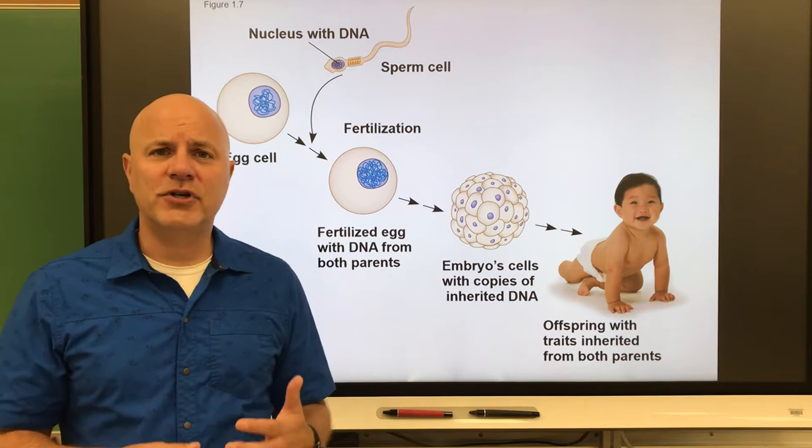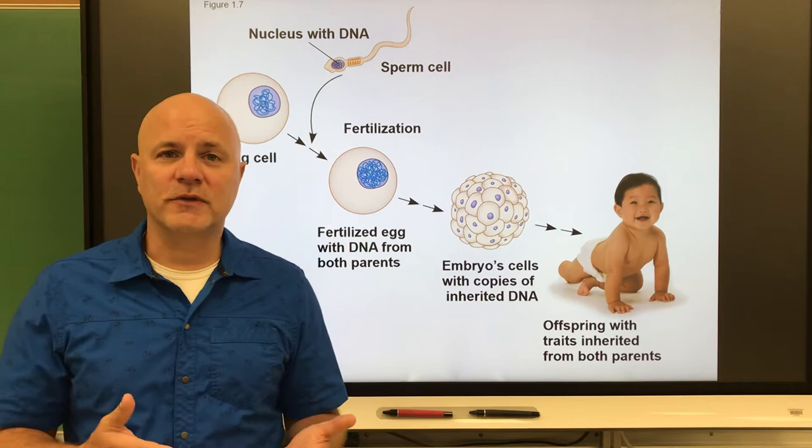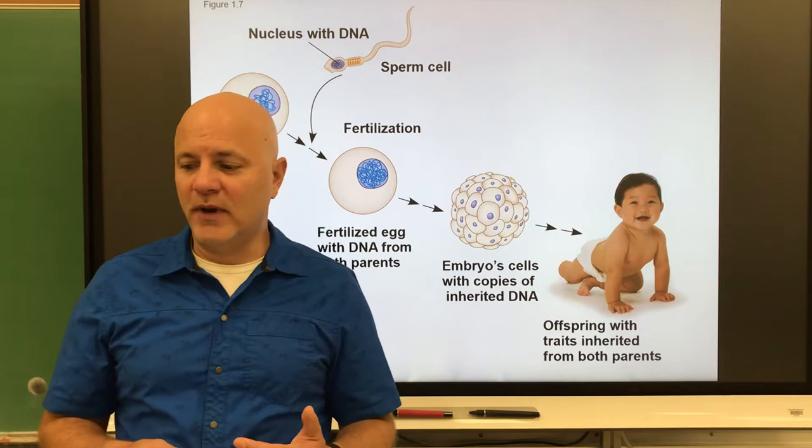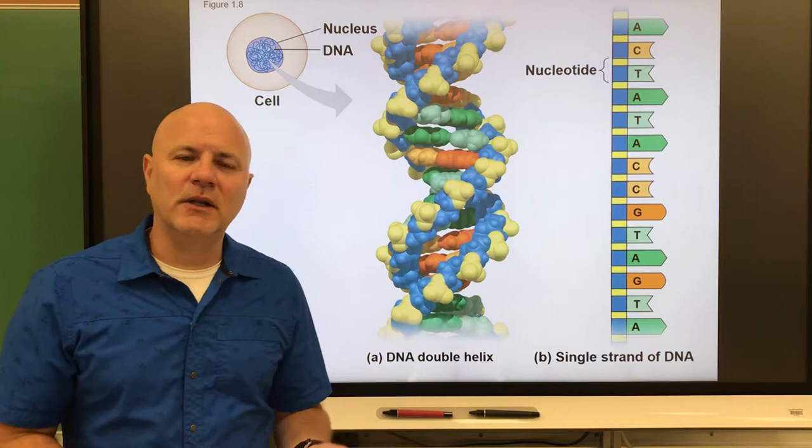So our genes are going to tell us what we look like, how we're going to work, and how we're going to behave. Of course, the environment also influences all of those, and it depends on which trait we're talking about as to which has more of an impact. Next is hereditary theory, which states that the genes of an organism are inherited as discrete units.